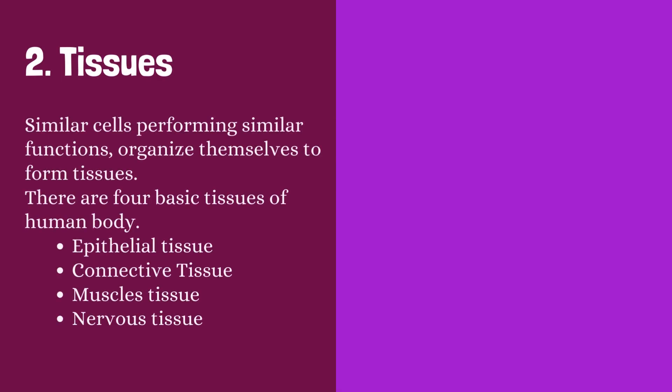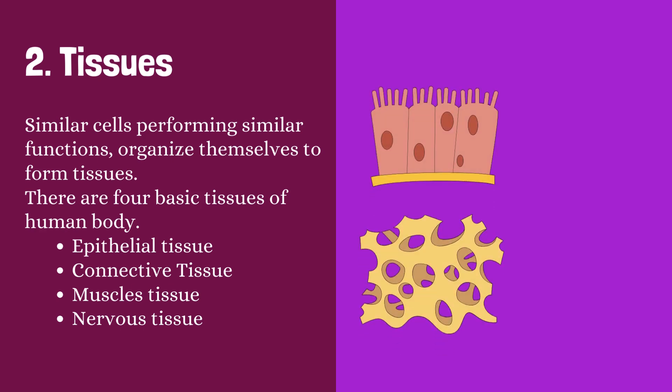Tissues. Similar cells performing similar functions organize themselves to form tissues. There are four basic tissues of human body: epithelial tissue, connective tissue, muscle tissue, nervous tissue.